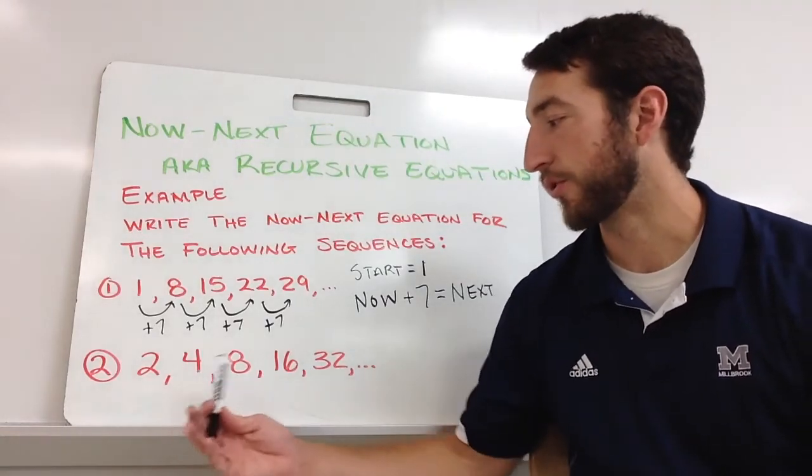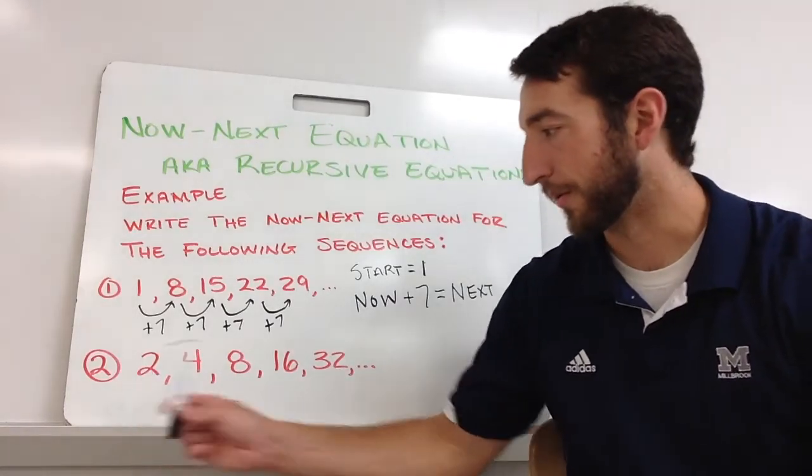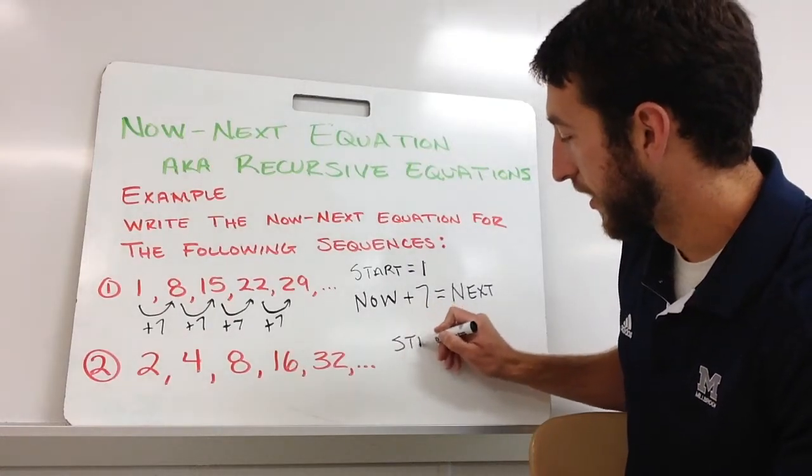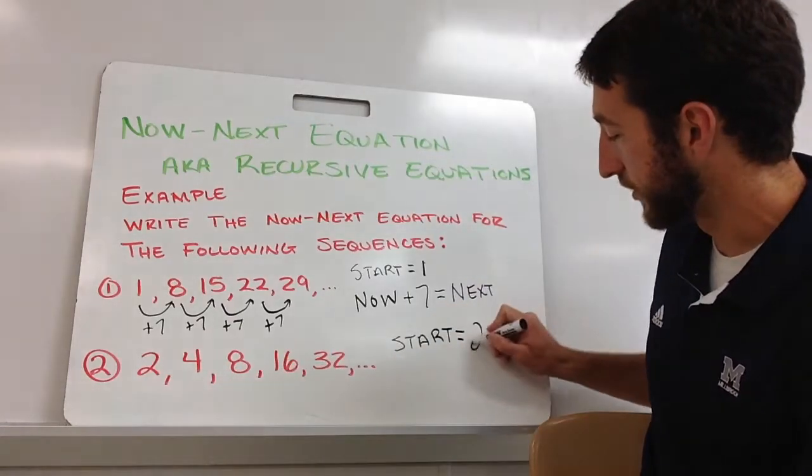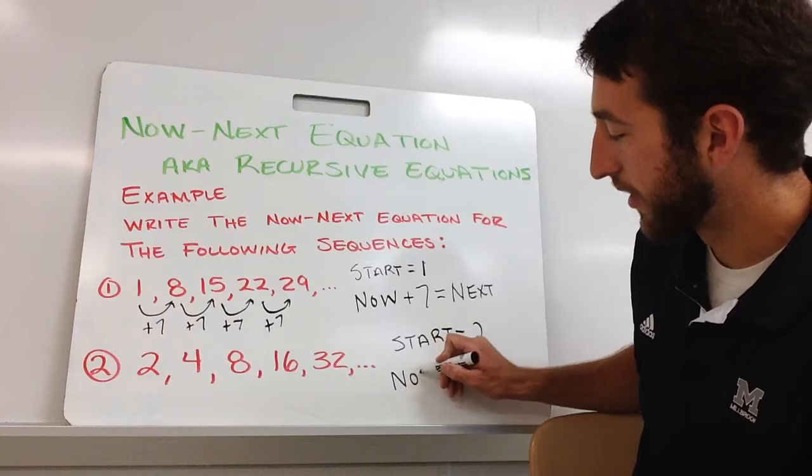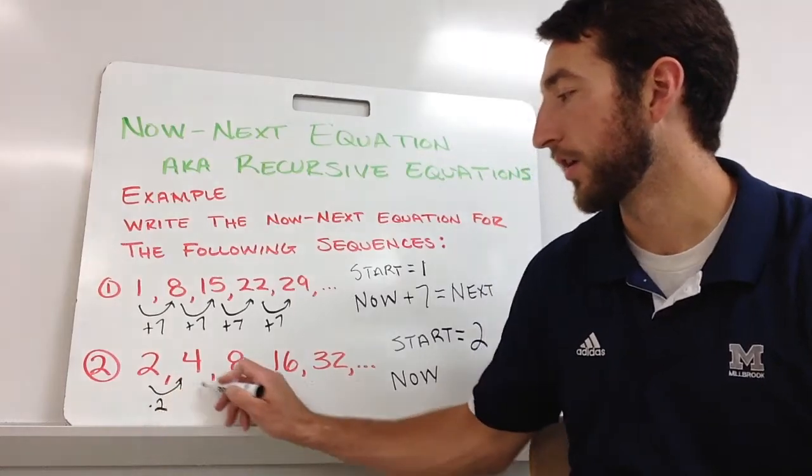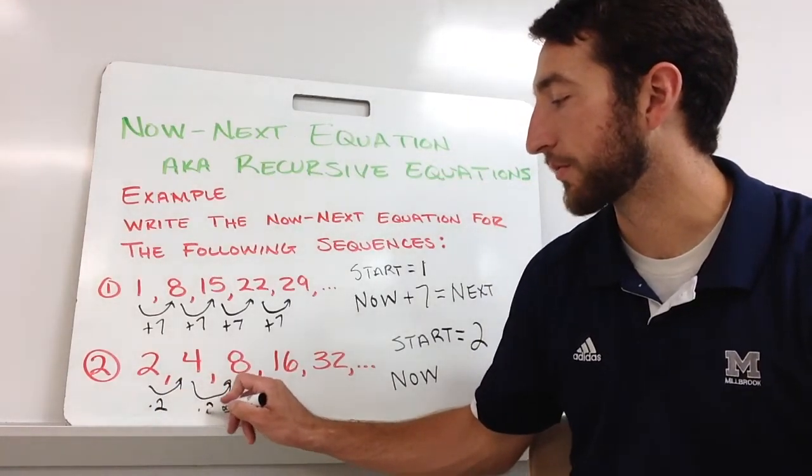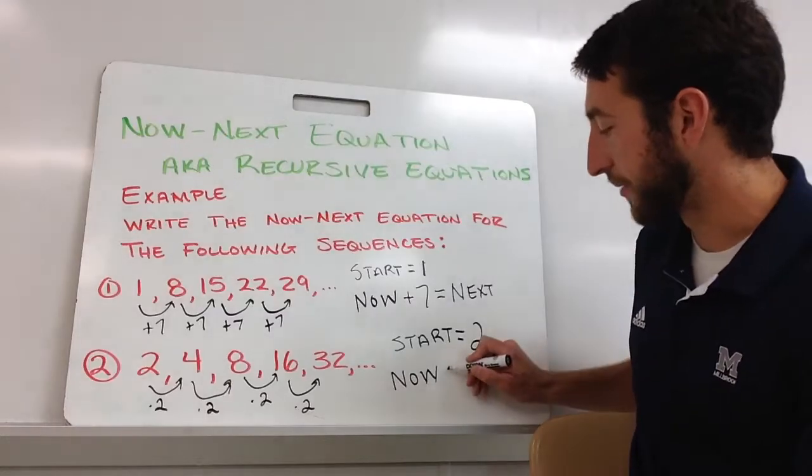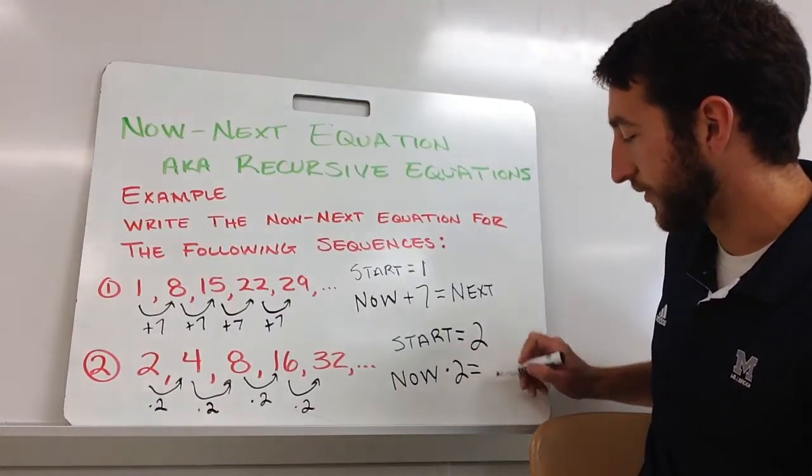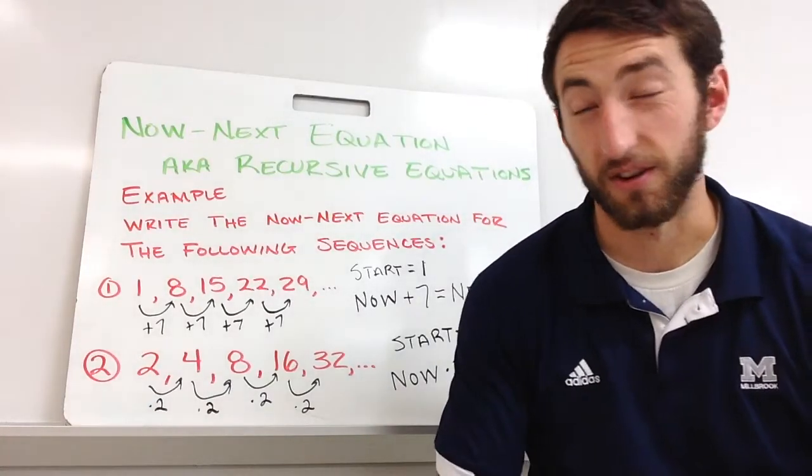Let's do the same thing for the next one. I got 2, 4, 8, 16, 32. What does it look like I'm doing this time? First, start out with my start equals first number in the sequence, which is 2. I'm going to take my now. It looks like I'm multiplying by 2. 2 times 2 gives me 4, 4 times 2 gives me 8, 8 times 2 gives me 16, 16 times 2 gives me 32. So I'm taking my now times 2 equals my next number in my sequence. That's how we do now-next equations.